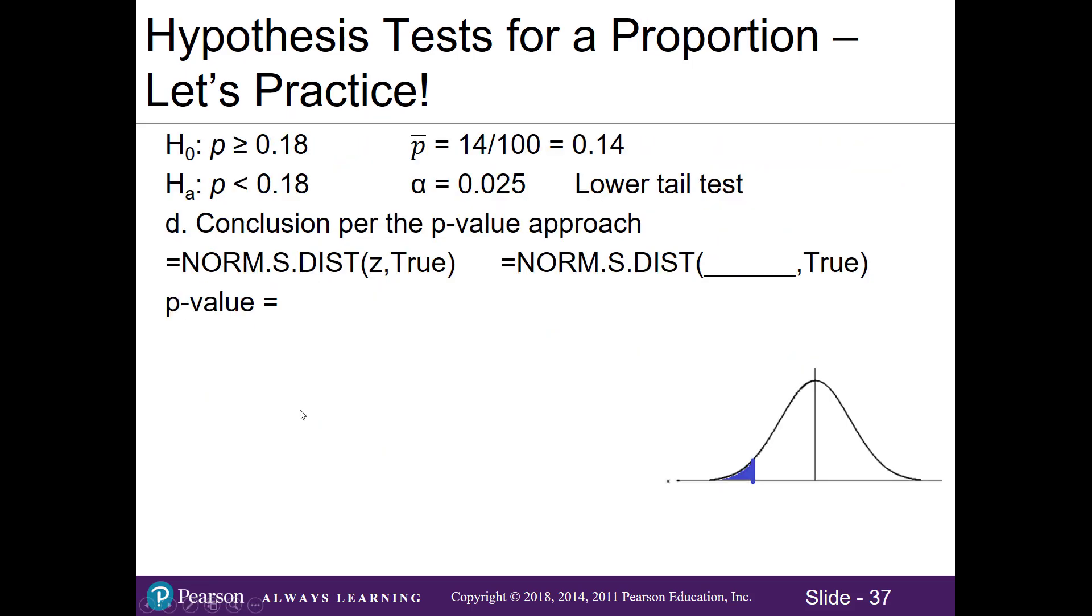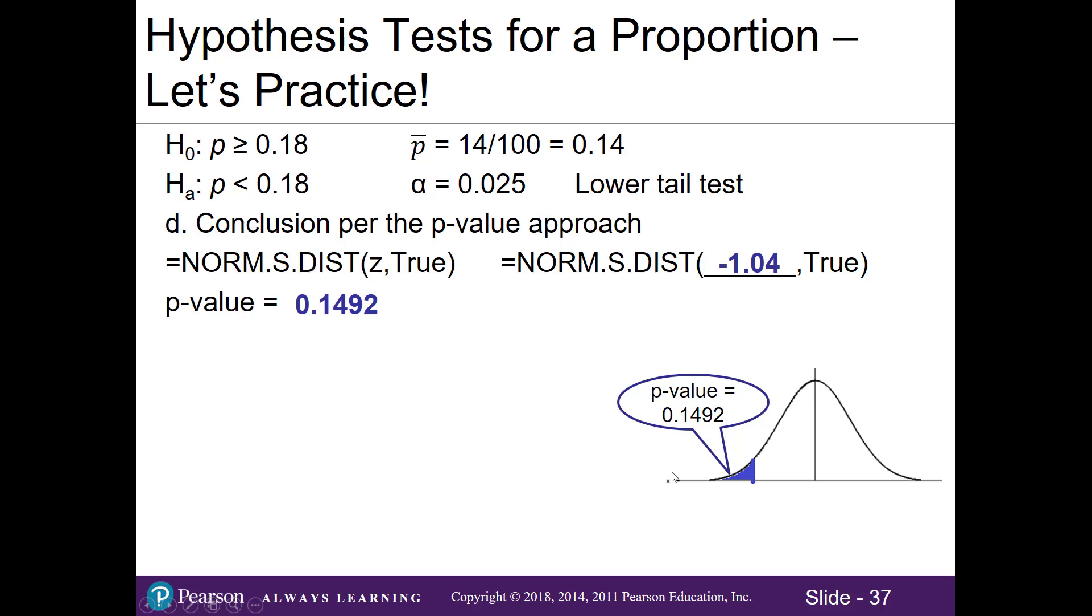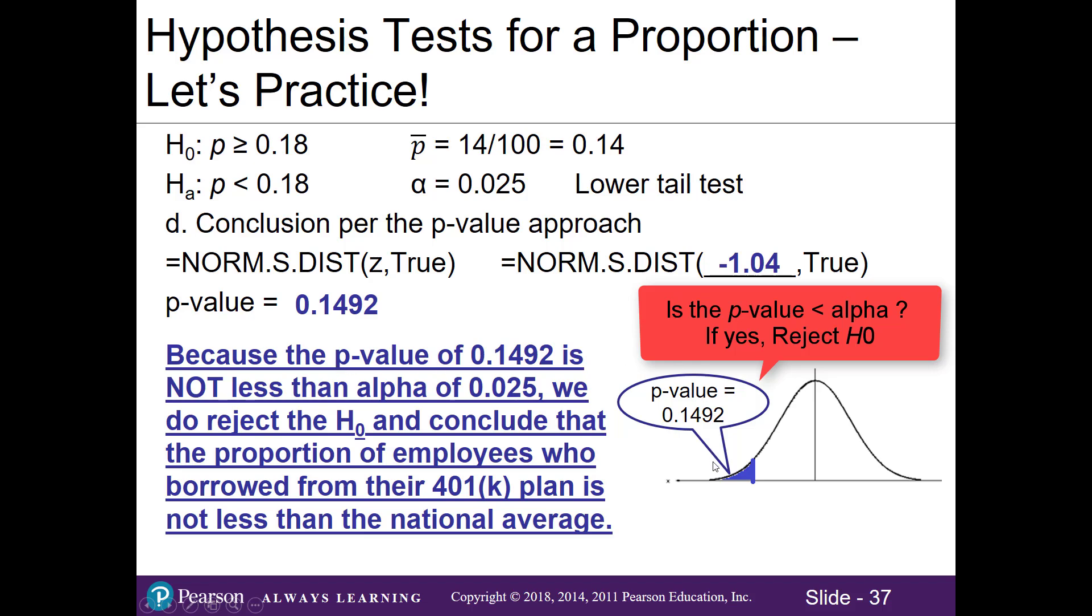For Part D, let's go ahead and use the p-value approach. Taking our information, we're going to use equals NORM.S.DIST. Enter the Z test statistic you got in Part B of negative 1.04, true. So for our lower tail test, equals NORM.S.DIST, parentheses, negative 1.04, true, close parentheses, hit enter, we get 0.1492. If we look at our distribution, our p-value or the area based on our test statistic is 0.1492, and we now have to compare it to our alpha value. Because the p-value of 0.1492 is not less than the alpha of 0.025, we do not reject the null and conclude that the proportion of employees who borrowed from their 401k plan is not less than the national average.